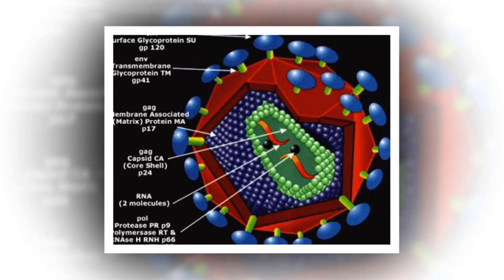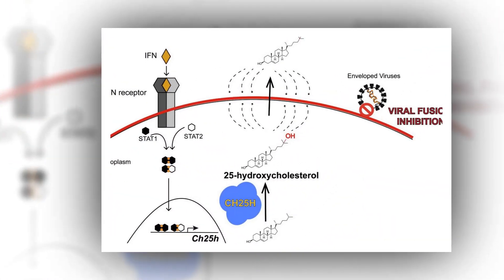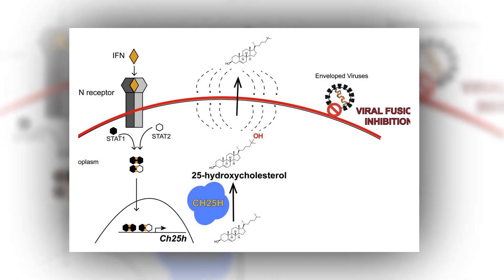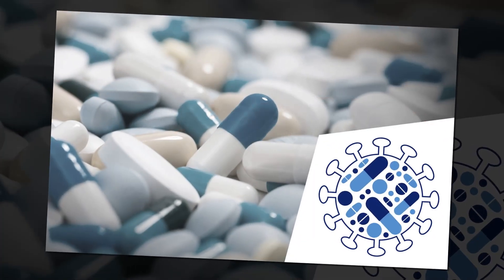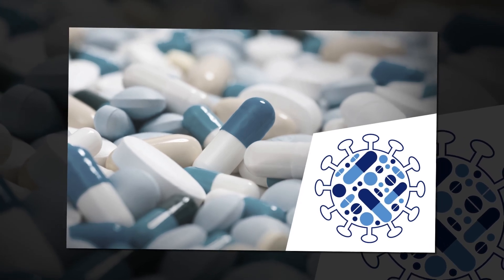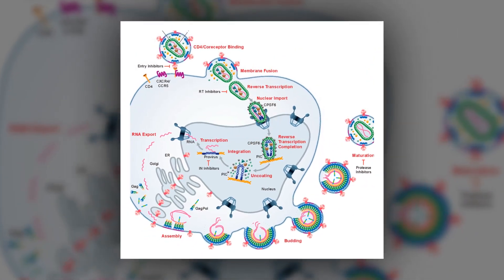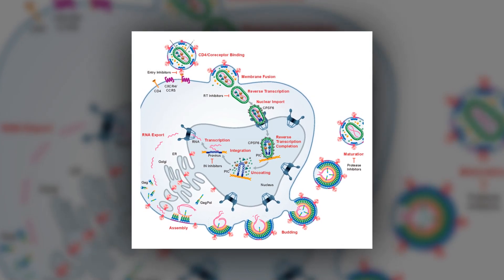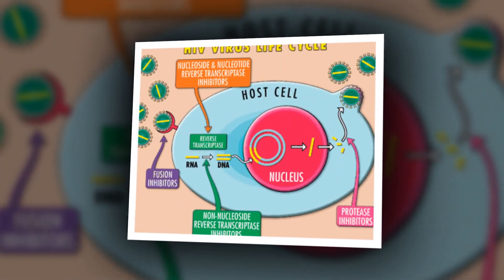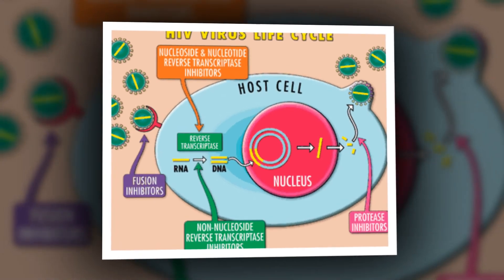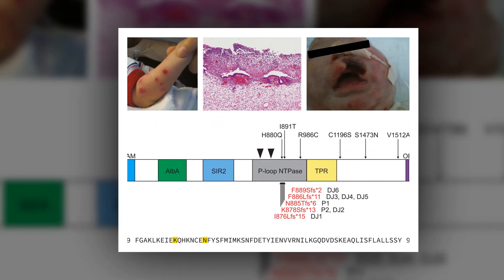SAMD9L decreased Gag and Env protein expression, contrasting with SAMD9's enhancing effect. SAMD9 and SAMD9L did not affect HIV1 RNA species or host cell RNA levels, suggesting a post-transcriptional mechanism. SAMD9L inhibited Gag p55 even under protease inhibitor treatment, indicating a pre-maturation effect. SAMD9L did not impact early lentiviral replication phases, suggesting specificity towards late replication.